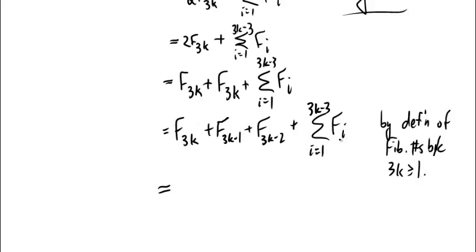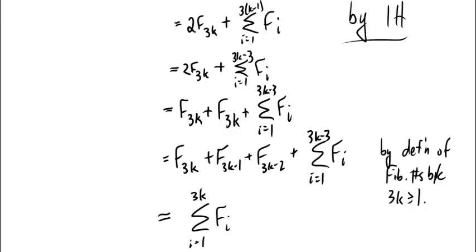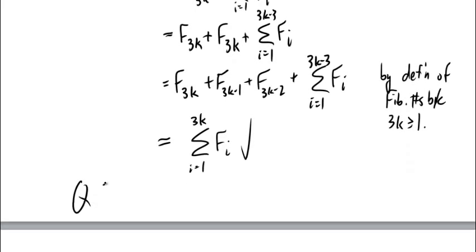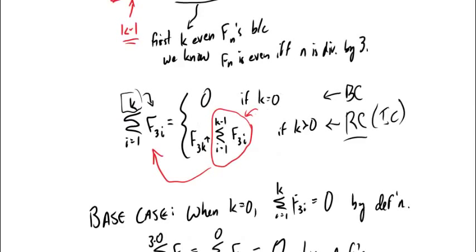Substituting in, we get F sub 3k plus F sub 3k minus 1 plus F sub 3k minus 2 plus the summation from i equals 1 to 3k minus 3 of F sub i. Combining these three terms with the summation, we get the summation from i equals 1 to 3k of F sub i — exactly what we needed to prove. The inductive step is complete.